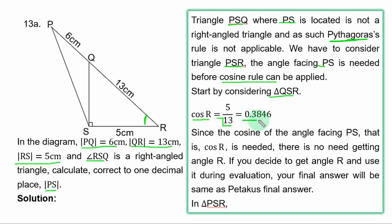If you divide, you have 0.3846. Since the cosine of the angle facing PS, that is cos R, is needed, there is no need getting angle R.